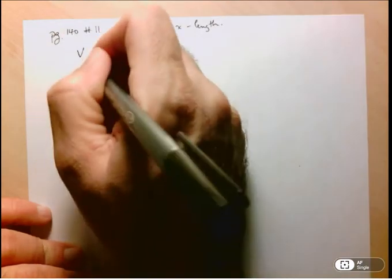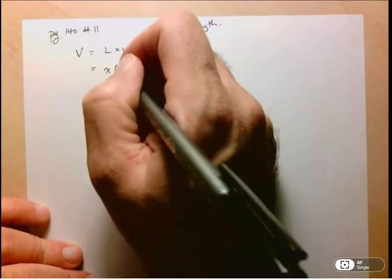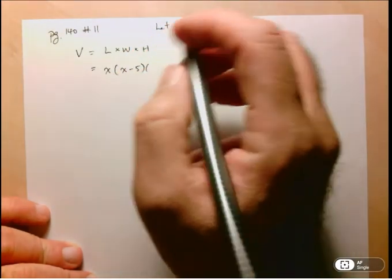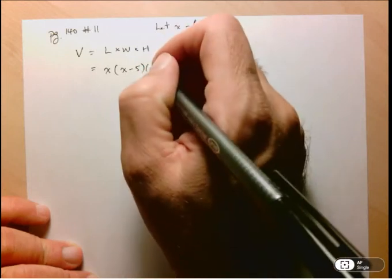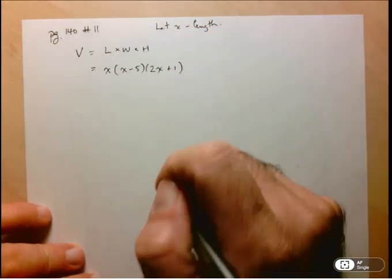So that's x times the width, which is 5 less than the length, so x minus 5, and then the height, which is 1 more than twice the length, so 2x plus 1. So here's our equation.